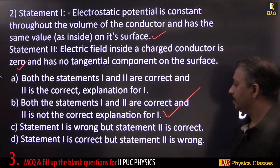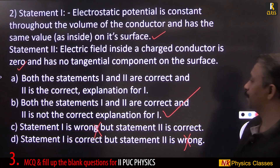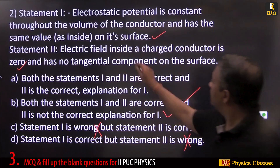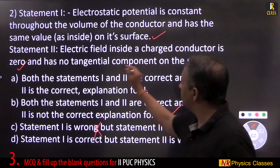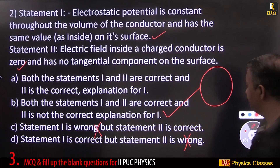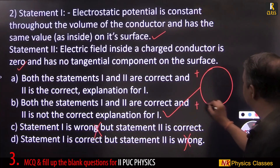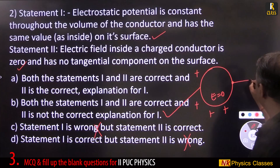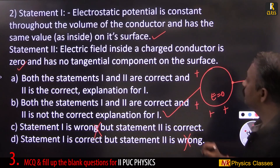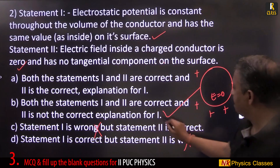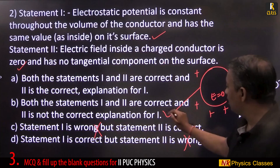Wait — that is wrong. Electric field inside a charged conductor is zero and has no tangential component. For a spherical shell, if charged, the electric field equals zero inside and on the surface the field is perpendicular. However, statement 2 cannot be the explanation of statement 1, so it is not the correct explanation.